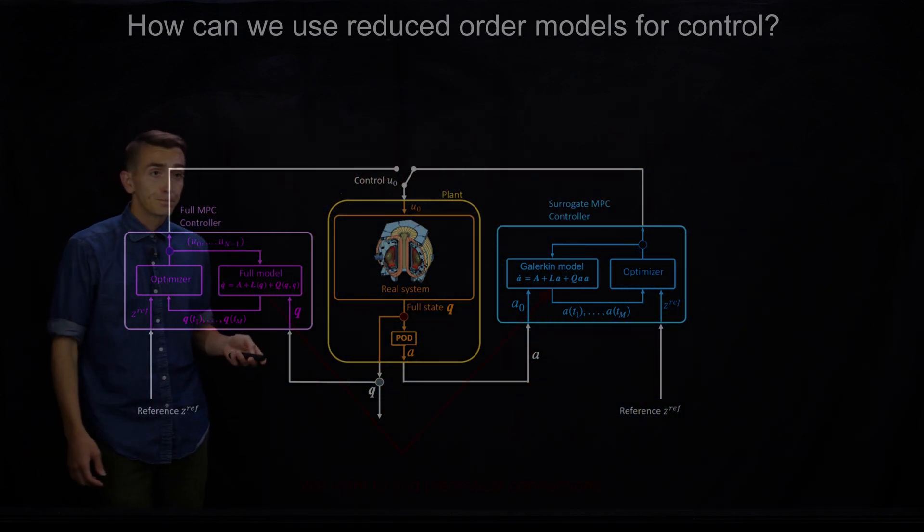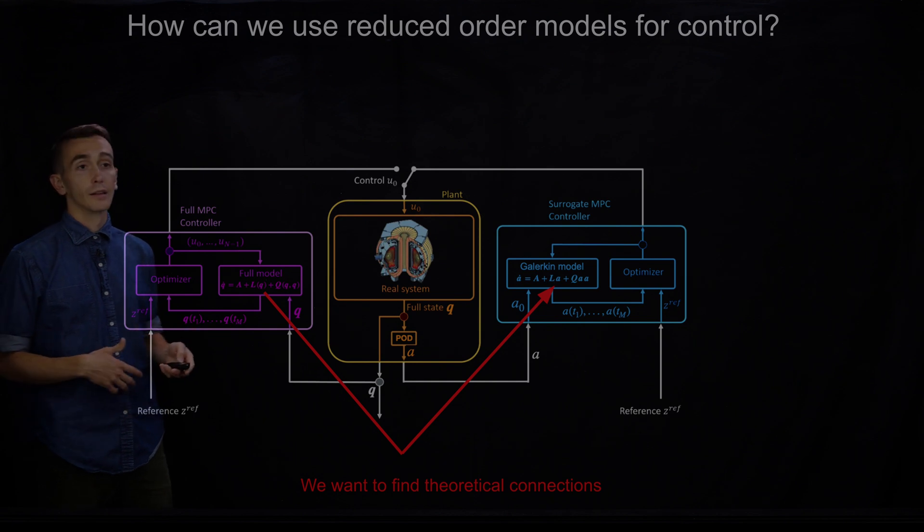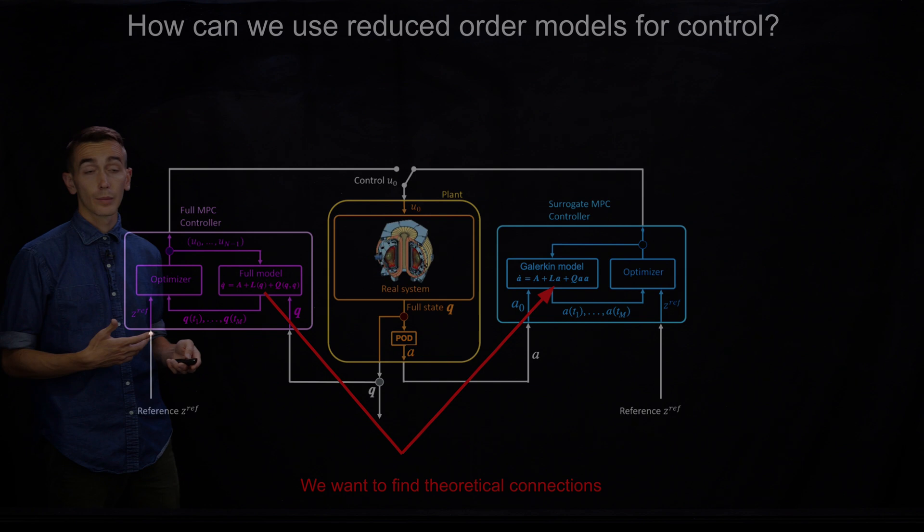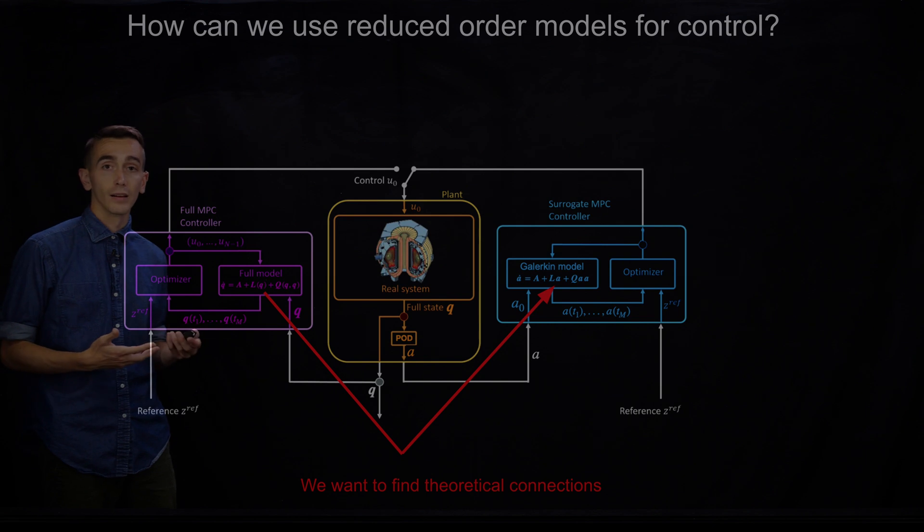So that's the game we would like to play. And we need to find theoretical connections between these full models and these surrogate models so that we can have certain guarantees and understanding of what's going on and the surrogate models. But at the same time, be able to have these surrogate models so that we can compute things fast enough to do real time control on plasma devices.